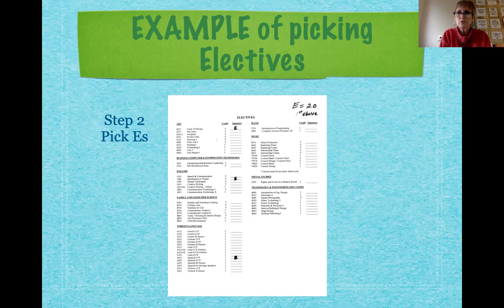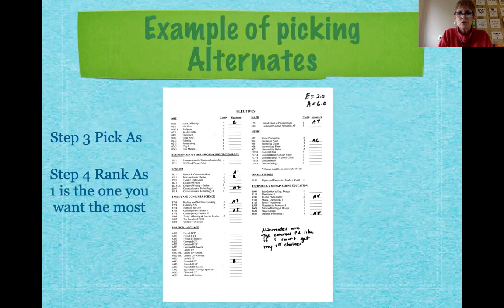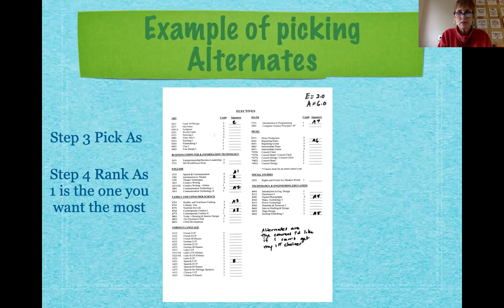We call those alternate classes. So after you've chosen your major choices and you have all your E's done, I want you to go back to your worksheet and put six credits worth of alternates — in other words, classes you would take if you couldn't get your first choice.